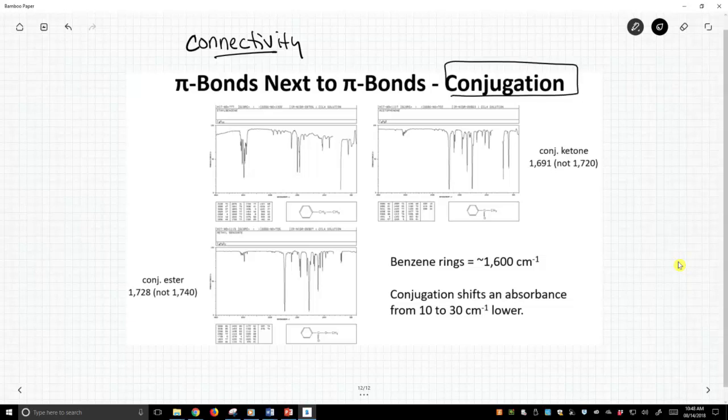Conjugation is most commonly where you have a double bond next to a single bond next to a double bond. So you have this alternation of a pi bond and a regular sigma bond and maybe another pi bond, and so you say that these bonds are conjugated. The two pi bonds are conjugated. It's really an example of resonance.